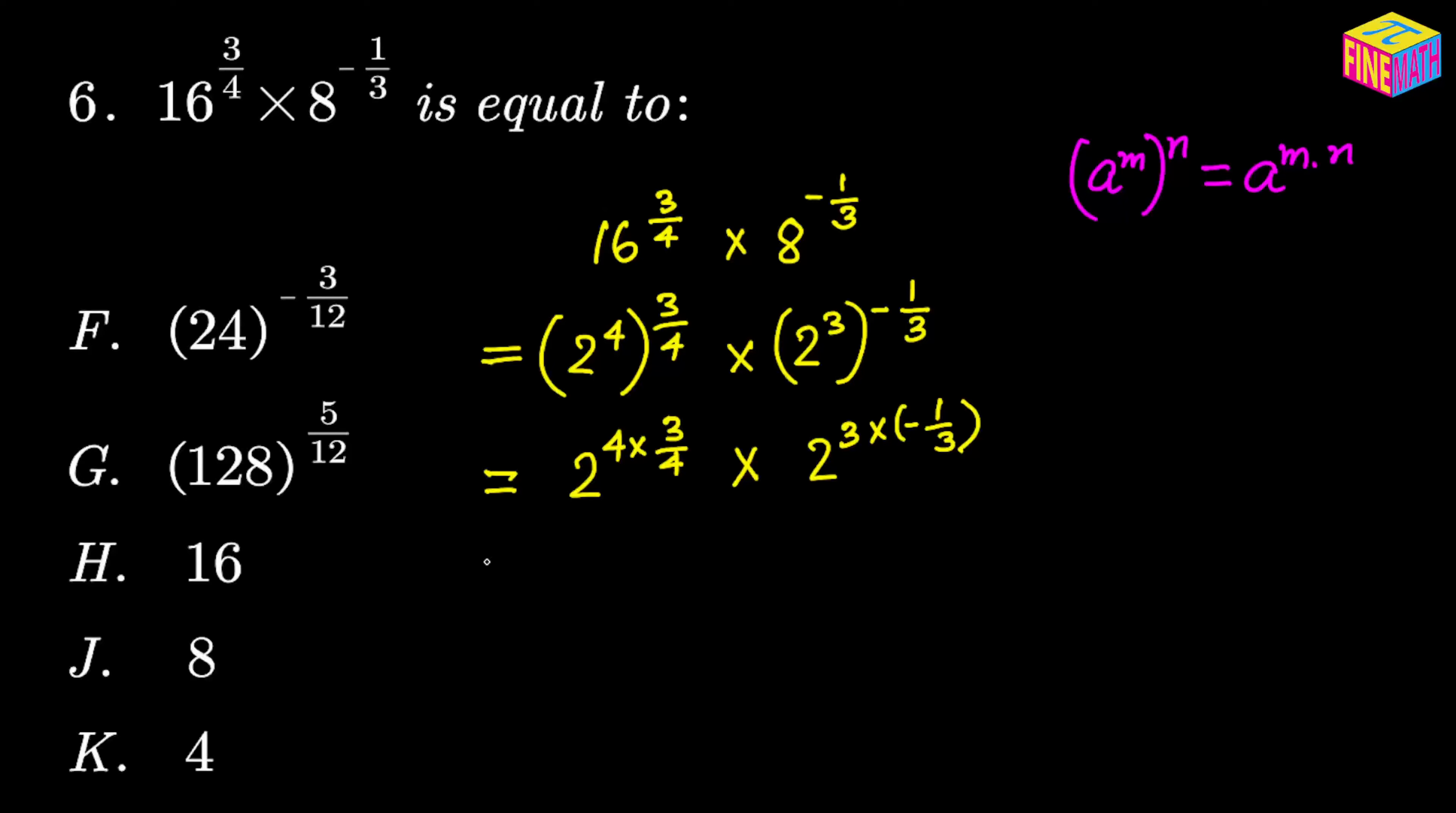Now from here, as you can see, the 4 here and the 4 in the denominator will cancel out each other. Similarly, this 3 and the 3 in the denominator—all in the exponent, by the way—will also cancel out each other. Finally, we are left with 2 to the power 3, which is 2 cubed, times 2 to the power negative 1.